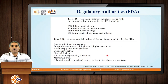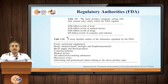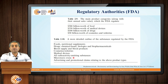Now talking about which are the regulatory authorities — in the majority of countries the regulatory authorities are named as Food and Drug Administration. The food and drug, both being consumable products, are considered under the same authority. Looking at the table given in this slide, the FDA has to regulate not only drug affairs but also foods, blood supply and blood products, cosmetics, medical devices, as well as some radioactivity-based substances.